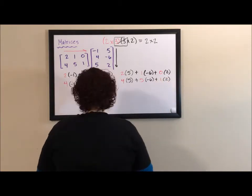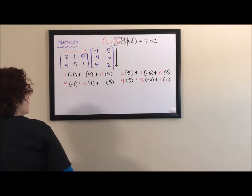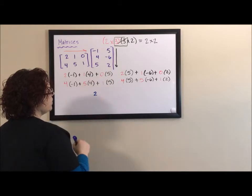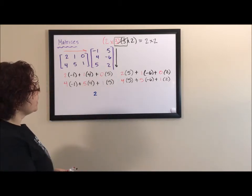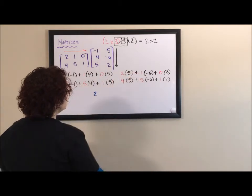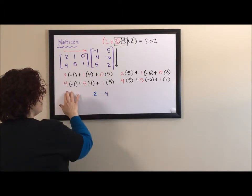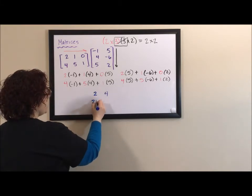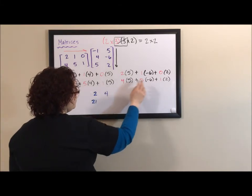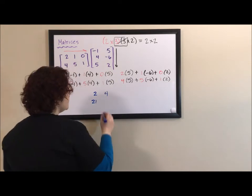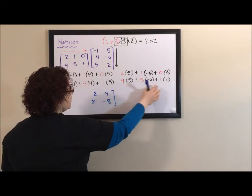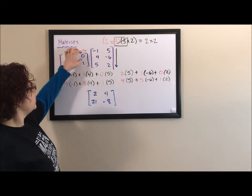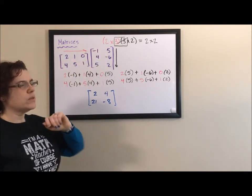So we have a lot of computation going on here, but this will give us our answer. Negative two plus four is positive two. Anything times zero is zero. Ten minus six is four. Negative four plus twenty plus five is going to be twenty-one. Twenty minus thirty plus two is going to be negative eight. And so when we multiply this matrix by this matrix, this is our solution matrix.